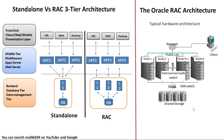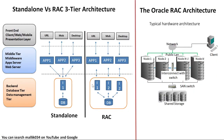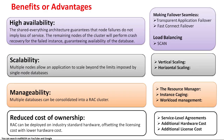This is the RAC hardware architecture. The advantages of RAC are: high availability, scalability, manageability, and reduced cost of ownership. High availability means the architecture guarantees that a node failure does not imply loss of service. If this instance goes down, the application can still communicate to the database using instance two, three, or four — whatever is available. High availability is achieved using Transparent Application Failover (TAF) and Fast Connection Failover (FCF).